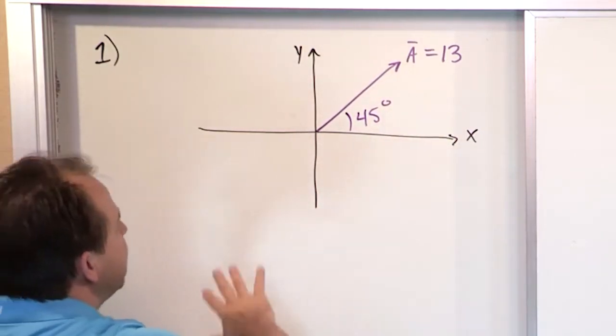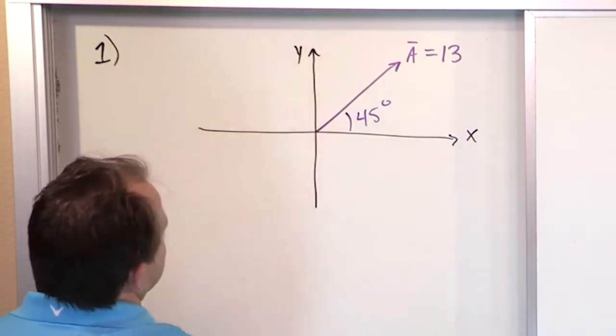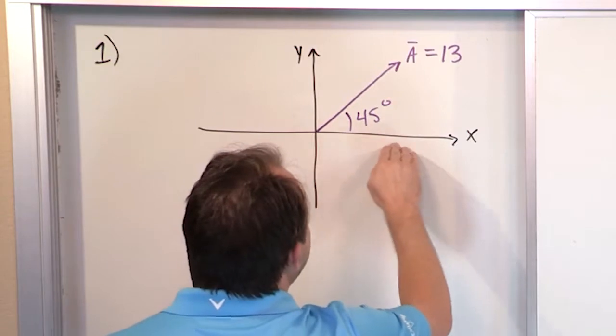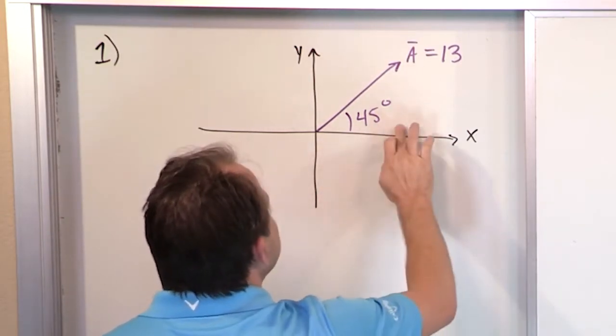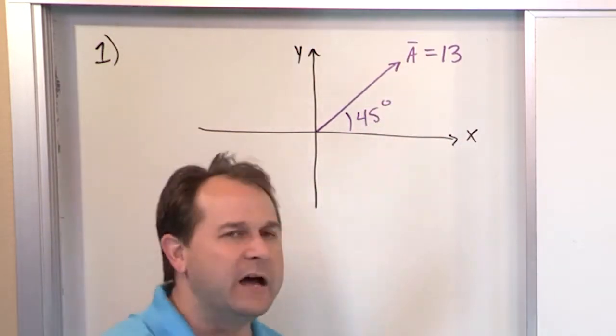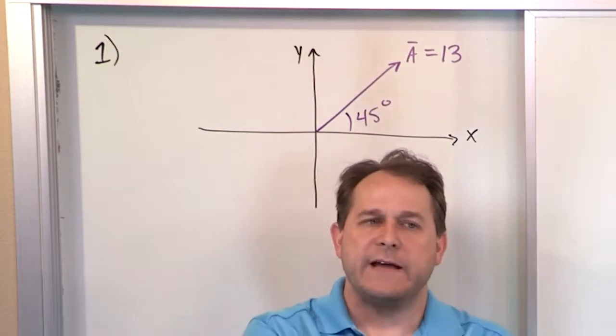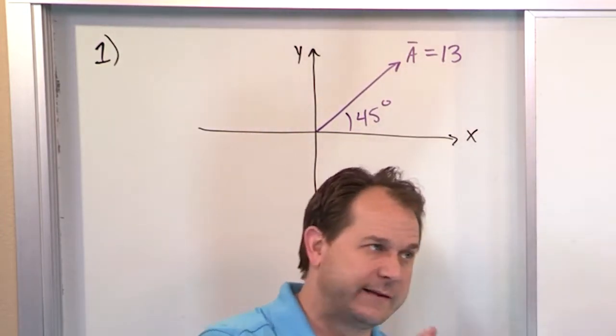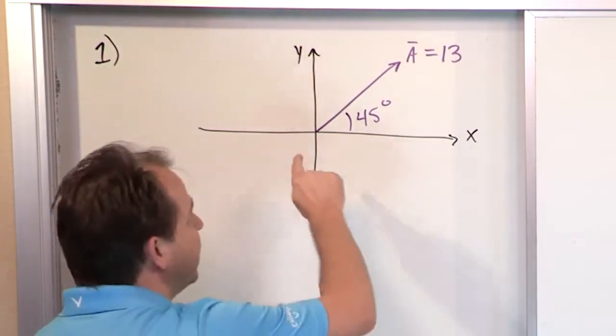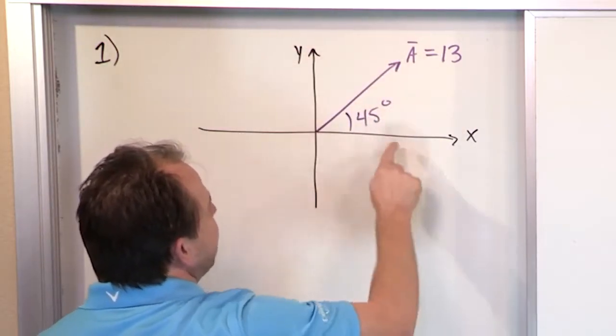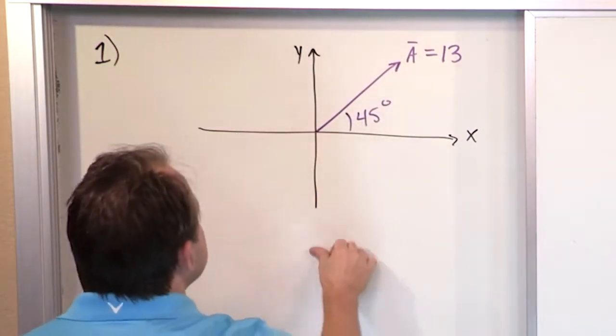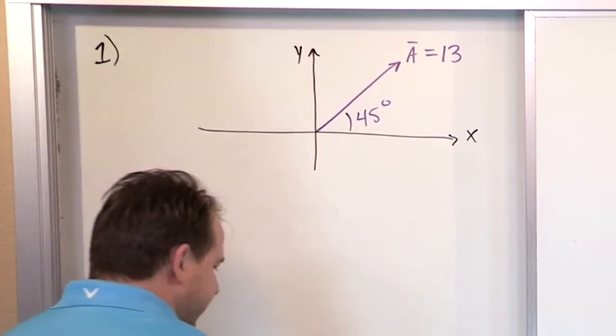Now before we do anything, because you know that this is at 45 degrees, once we calculate the x portion of the component and the y portion of the component, because it's a 45 degree angle, the x and y components will be equal because the thing is splitting the difference. You see I've drawn it splitting the difference at 45 degrees between x and y. So the x and y component we strongly suspect should be the same.